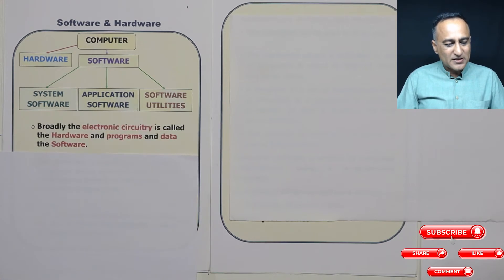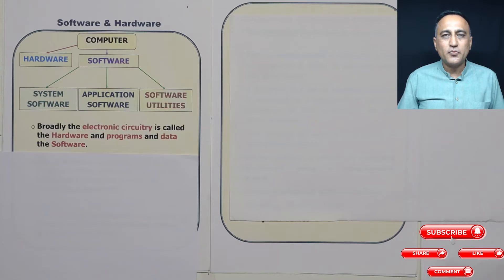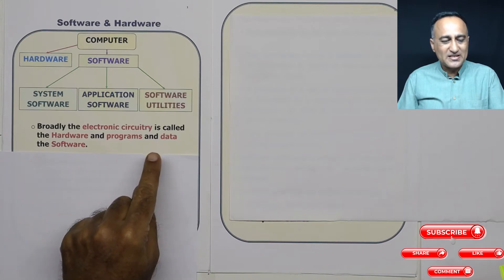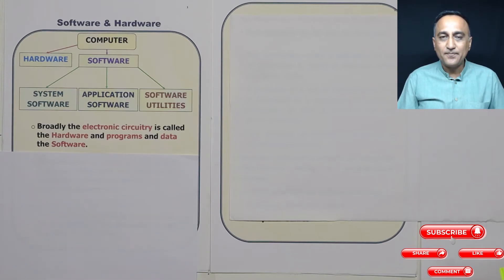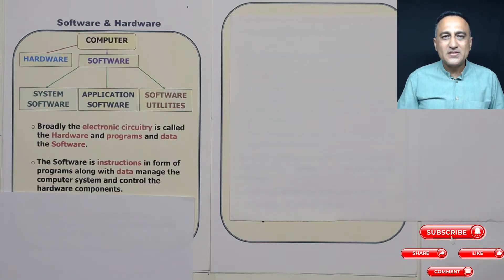Let's try to understand what is hardware and software. Hardware is all the electronic circuitry or electronic computer components of a computer. Software is programs plus data. What is a program? Programs are a series of instructions. So let me tell you what is an instruction.